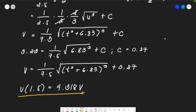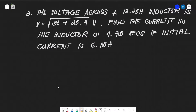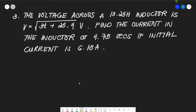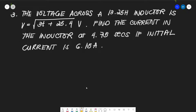Now for our last example. The voltage across a 13.25 Henry inductor is √(3t + 25.4) volts. Find the current if the inductor at 4.75 seconds if the initial current is 6.15 amperes. For an inductor, the formula for current is I = (1/L)∫V dt.